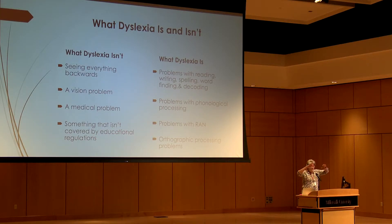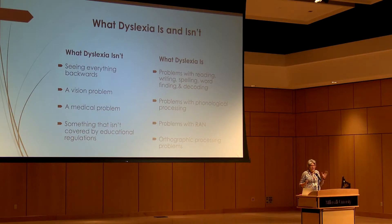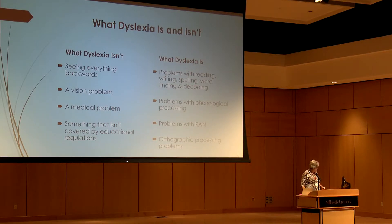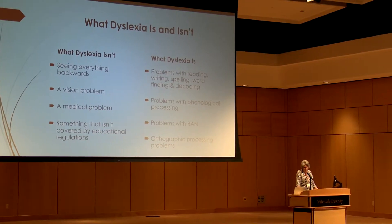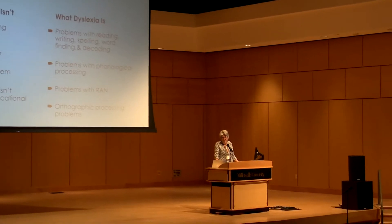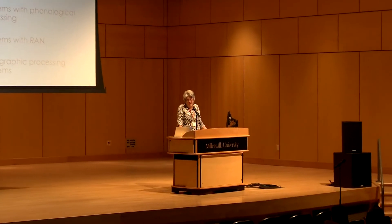Dyslexia as a disability comes under the larger umbrella of learning disability, and we get into disputes about whether the term is even used. Some people say dyslexia is a medical thing and they don't deal with medical problems. Actually, dyslexia can technically be diagnosed on an autopsy, but it's usually an educational diagnosis.